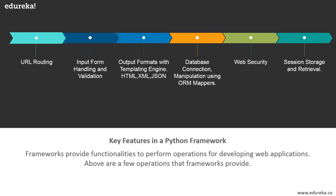A template engine allows developers to generate desired content types — for example, HTML, XML, or JSON. We also have data connection, configuration, and persistent data manipulation through an ORM, which is also known as Object Relational Mapper.